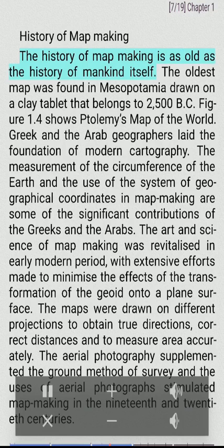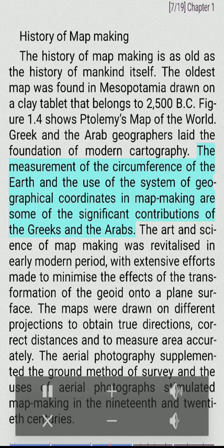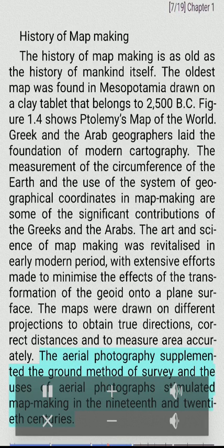History of Map Making. The history of map making is as old as the history of mankind itself. The oldest map was found in Mesopotamia, drawn on a clay tablet that belongs to 2500 B.C. Greek and Arab geographers laid the foundation of modern cartography. The measurement of the circumference of the Earth and the use of the system of geographical coordinates in map making are some of the significant contributions of the Greeks and the Arabs. The art and science of map making was revitalized in the early modern period, with extensive efforts made to minimize the effects of the transformation of the geoid onto a plain surface. Maps were drawn on different projections to obtain true directions, correct distances and to measure area accurately. Aerial photography supplemented the ground method of survey and the use of aerial photographs stimulated map making in the 19th and 20th centuries.